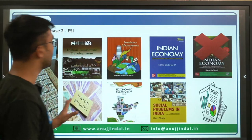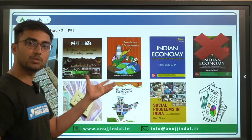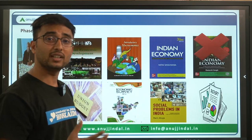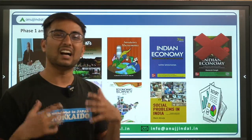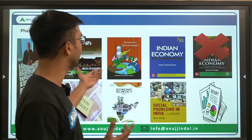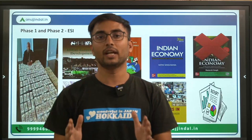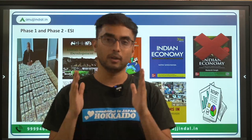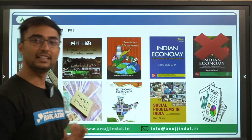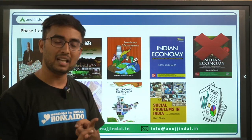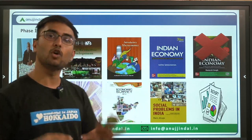Rather than recommending four to six books per subject as many educators do for ESI, it would be very unrealistic to go after that many books. Keep your book list minimal and have minimum sources for your preparation. The book list provided here is reliable, applicable, and makes more sense than depending on three to four books per subject.